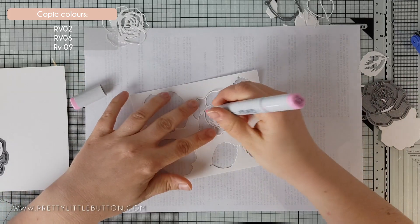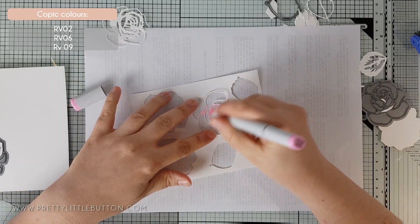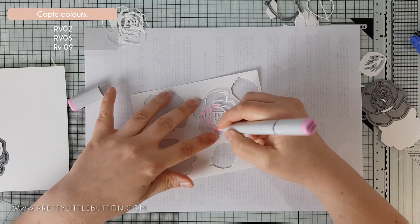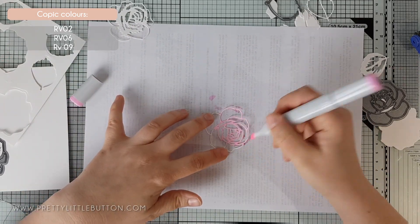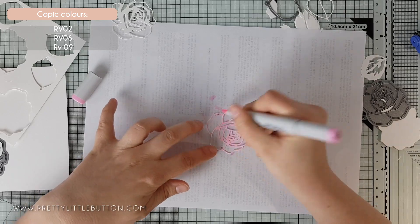I started off placing the die cut back into the negative to help color in the shape. However, I found in the end it was just as easy to color the shape without the negative piece and I just held it in place with my fingers instead.